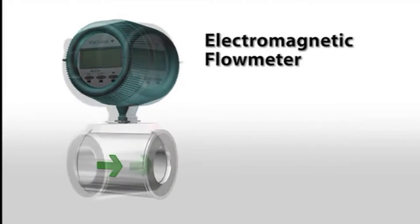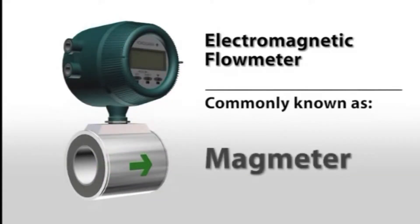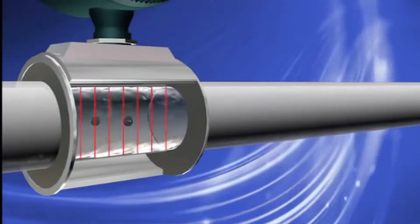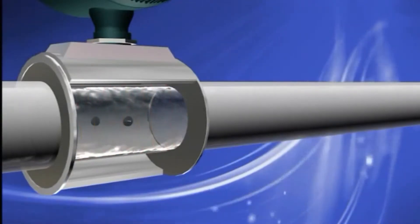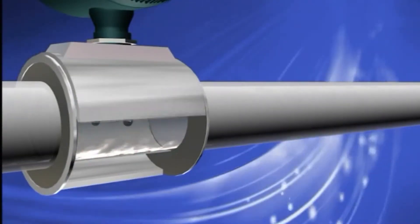The electromagnetic flow meter, commonly known as the magmeter, gets its name from the magnetic field generated within the flow tube that produces a signal proportional to flow.